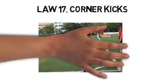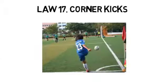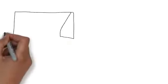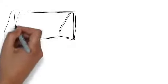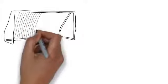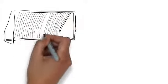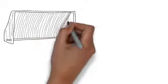Law 17: corner kicks. If the ball goes over the end line and was last touched by the defending team, a corner kick is awarded to the attacking team. A player places the ball on or inside the marked corner area and kicks it into play. A goal can be scored directly from a corner kick — as long as it's a shot or a pass, it is good.